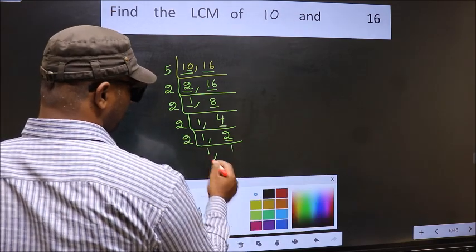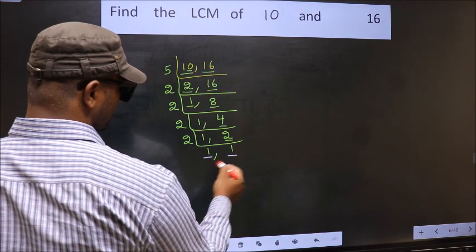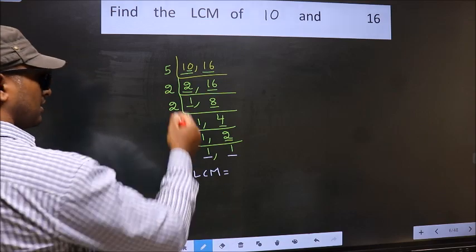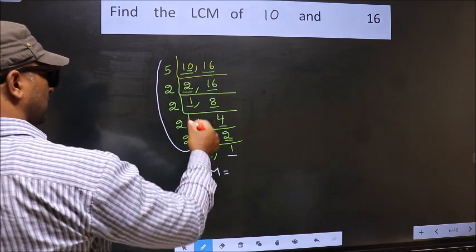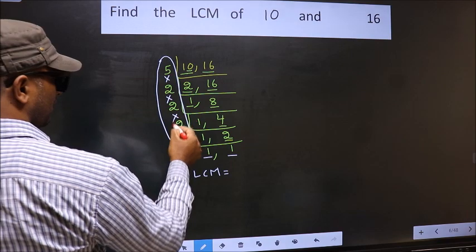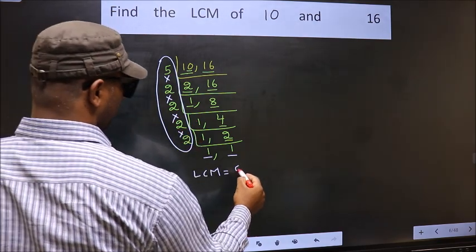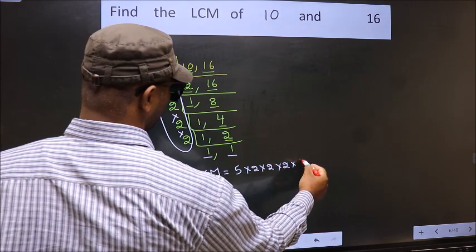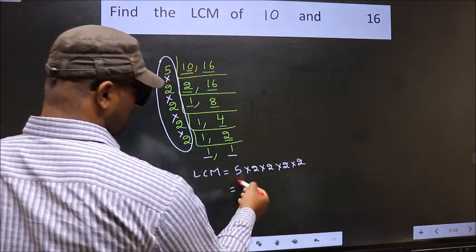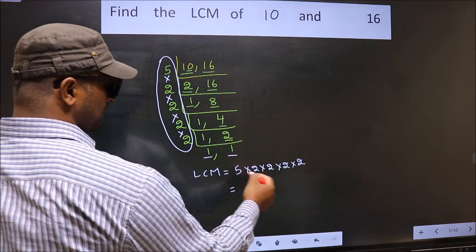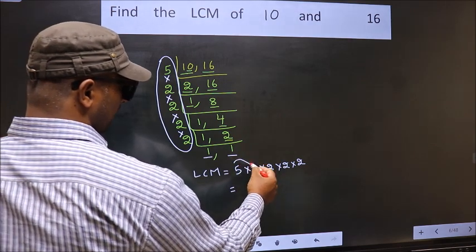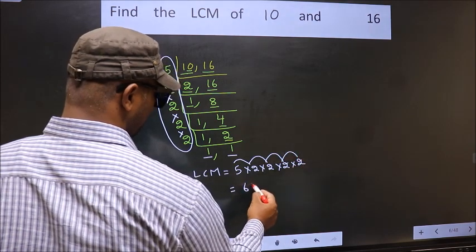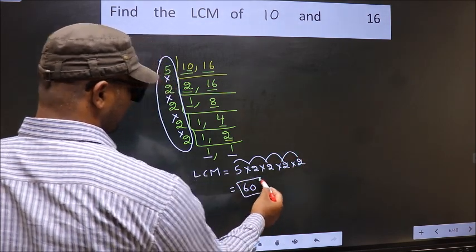So, we got 1 in both the places, so our LCM is the product of these numbers. That is 5 times 2 times 2 times 2 times 2. Let us multiply these: 5 times 2 is 10, times 2 is 20, times 2 is 40, times 2 is 80. So, 80 is our LCM.